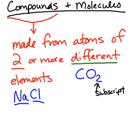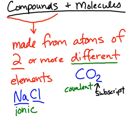A key difference between carbon dioxide and sodium chloride is the type of bond holding them together. The bond in sodium chloride is an ionic bond, while the bond in carbon dioxide is a covalent bond. So carbon dioxide is a covalent compound and sodium chloride is an ionic compound. Later in the year you'll be able to determine ionic vs. covalent just by looking at the periodic table, but for now I'll tell you which is which.